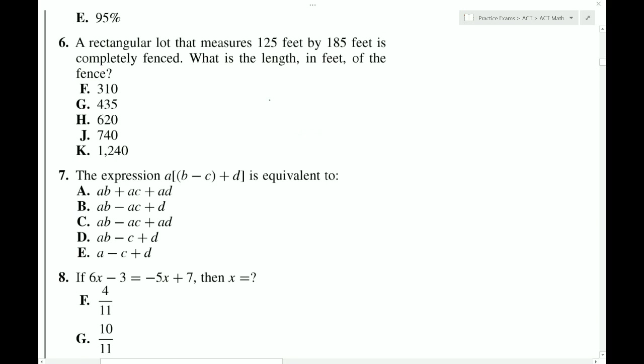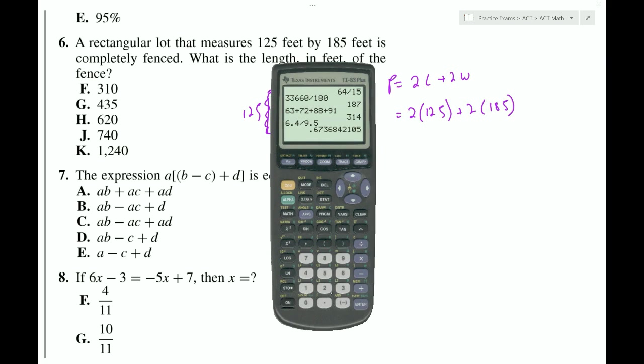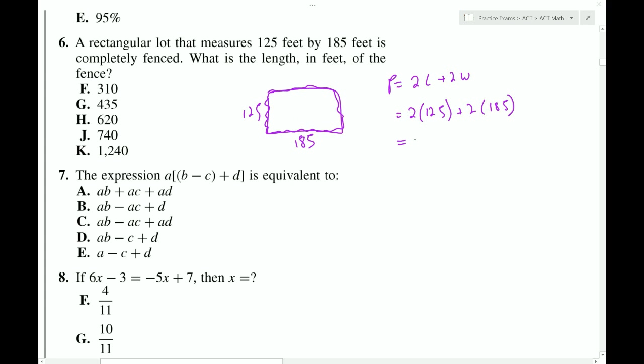Rectangular lot that measures 125 feet by 185 feet is completely fenced. What is the length in feet of the fence? So fencing always has to do with the outer region, which we call perimeter. And in this case, perimeter is twice the length plus twice the width. So it's twice 125 plus twice 185. So calculator, 2 times 185 plus 2 times 125. So we get 620. Now, one quick question here is how come I didn't use parentheses? Well, the calculator is smart enough to know that multiplication comes before addition. So it'll do the multiplication first. Then it'll do the addition. So we get 620, which is choice H.